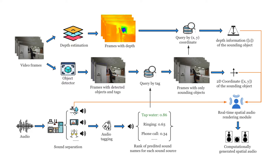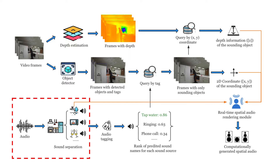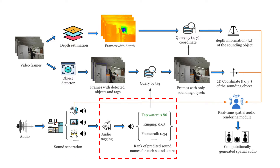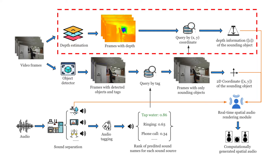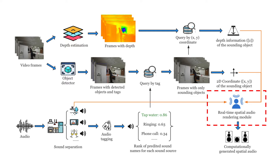At this time, the object-oriented audio spatialization pipeline will run in the backend to separate the audio into individual soundtracks, predict the tag for each soundtrack, identify and localize the sounding object, and estimate the depth of each sounding object. The complete spatial coordinate of the sounding object together with its corresponding audio will then be sent into the spatial audio rendering module to render the output for each audio channel in real time.